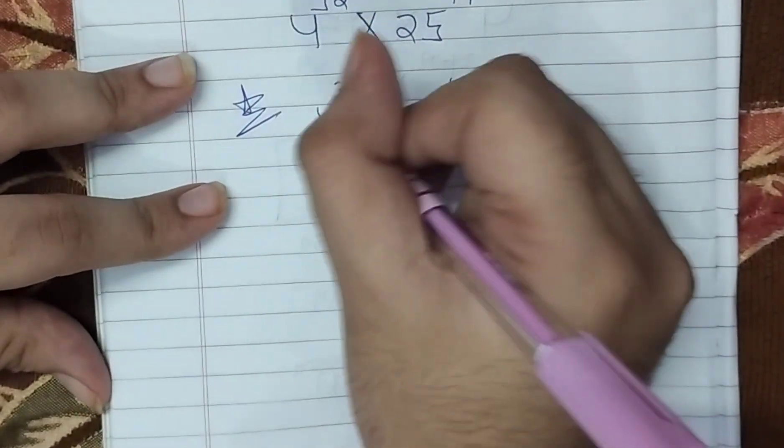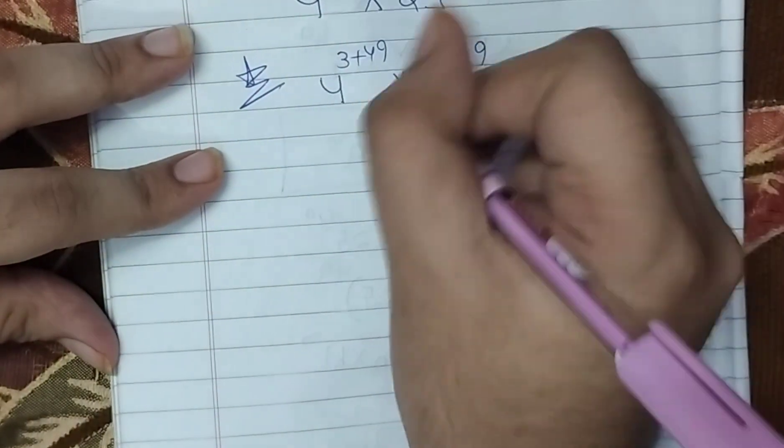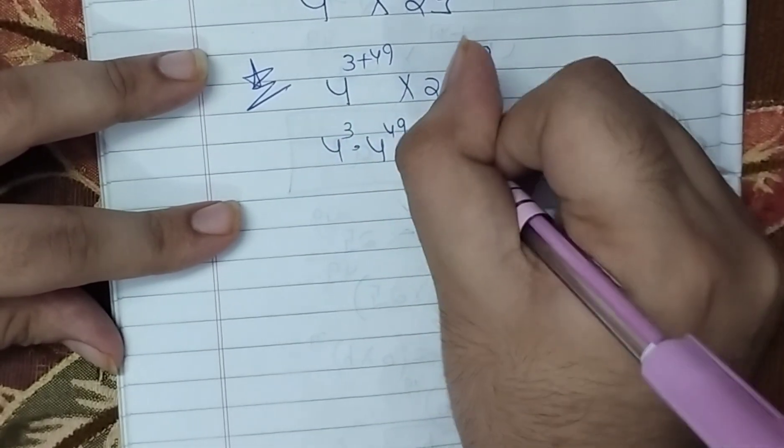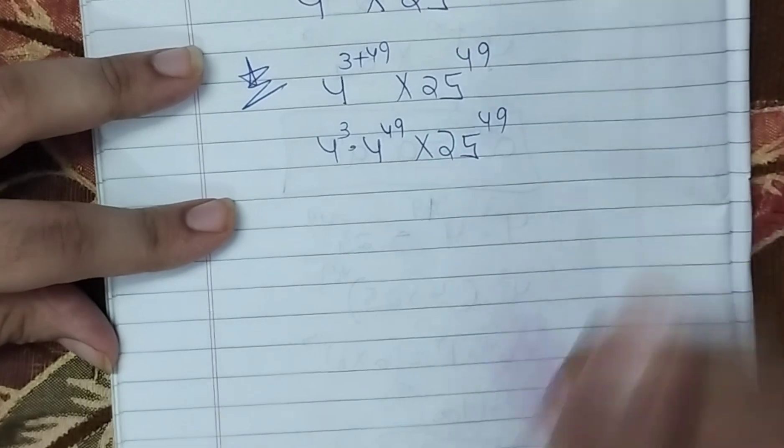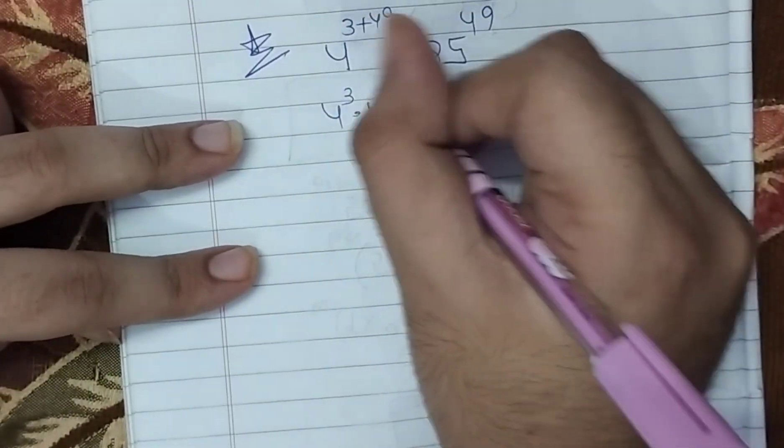We need to make the powers the same. 4 to 3 multiplied by 4 to 49 multiplied by 25 to 49. Now we want to make this simple.